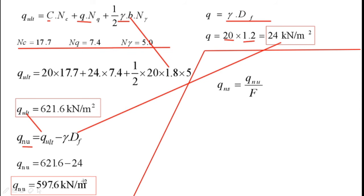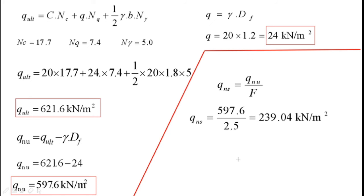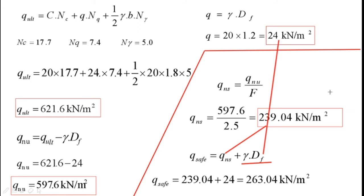Next thing, we'll determine net safe bearing capacity. How do you determine it? Just this value of Q_nu divided by factor of safety 2.5. You will get the value of net safe bearing capacity as 239.04 kN/m². Still it is not the safe bearing capacity, it is net safe bearing capacity. Next, once you got it, now you can determine safe bearing capacity. So the only thing that you have to do is take net safe bearing capacity and add this 24 value which you have previously determined. So you will get the safe bearing capacity as 263.04 kN/m². So far we have reached part one of the solution.